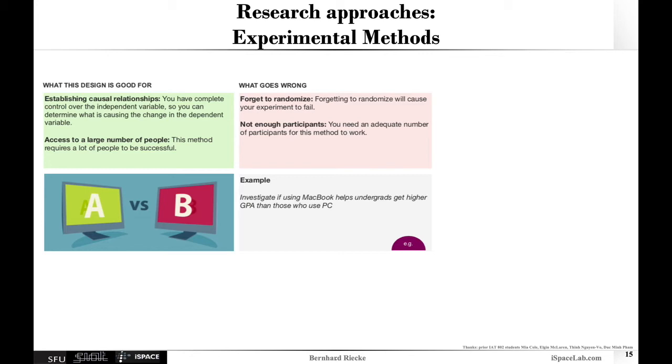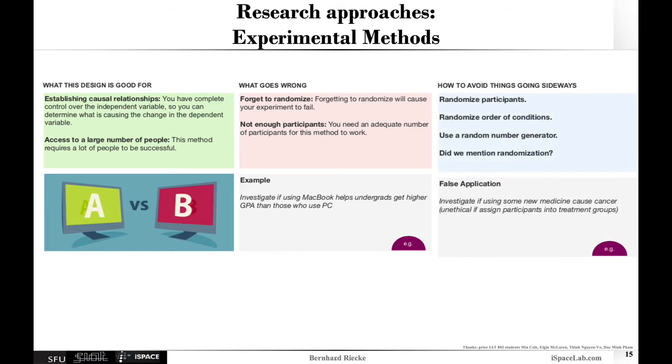For example, if you want to investigate if a MacBook helps undergrads get higher GPA than those who use a PC, you can't see the promise unless you actually would give people a MacBook and a PC randomly. Otherwise there are always some confounds because you cannot randomize. How could you avoid things going sideways? It's really important to randomize and control for just about anything that you can. Randomize the participants, randomize or counterbalance the different conditions. Use a random number generator. If there's too many conditions, you can use Latin square designs.